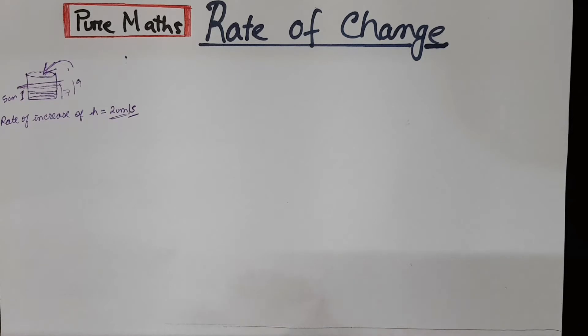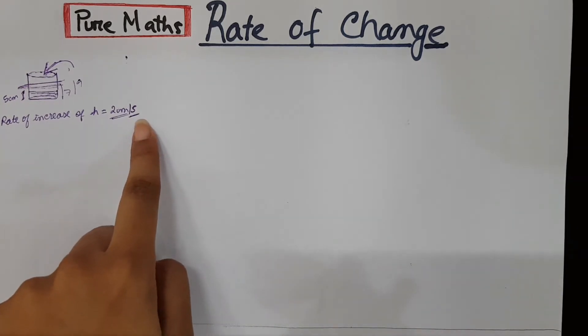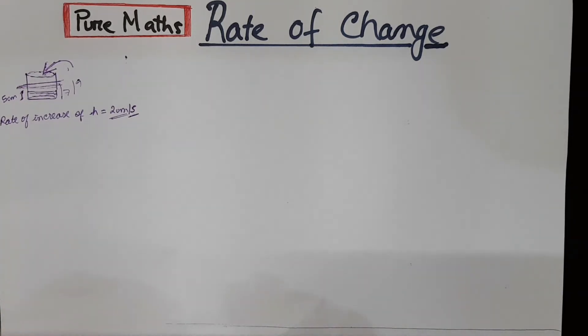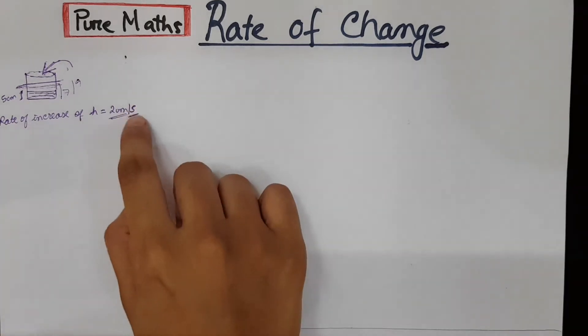It has to be per second, it can be per second, per minute, per hour, that is 1 hour, 1 minute. It has to be something, a unit time.